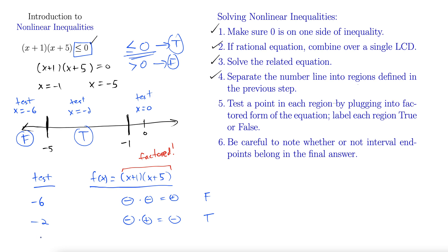And finally, let's test x = 0. So plugging in zero here, 0 + 1 is positive. 0 + 5, that's positive. Positive times positive is still positive. But we're looking for places where this is negative, less than or equal to zero to be true. So this is false.